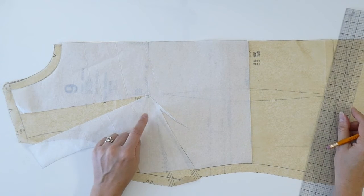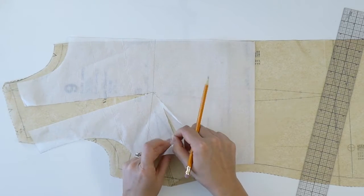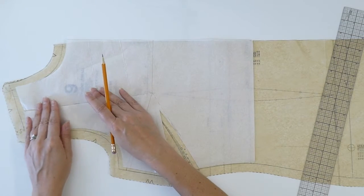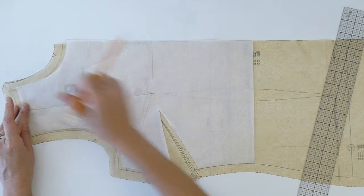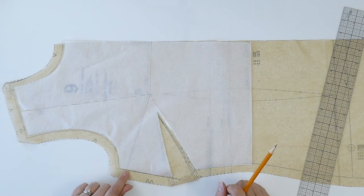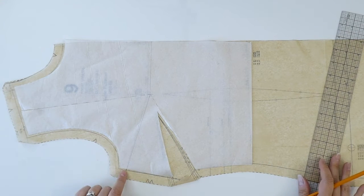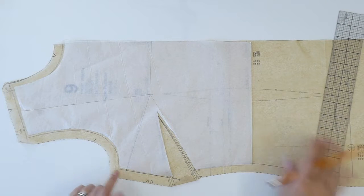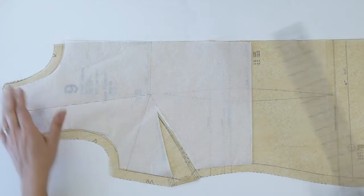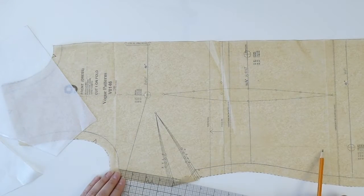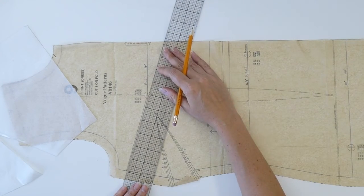And then once I have that position drawn in, I'm going to put my pattern back to where it used to be and just secure that in place. And then automatically I have the pitched position of this bust dart. So all I need to do to transfer it to my pattern is measure the distance from the base of the armhole to where that new line is, make a mark on my pattern, and then just join that to the bust point.